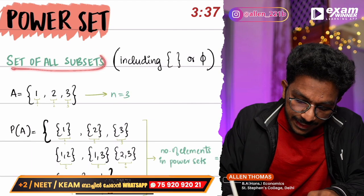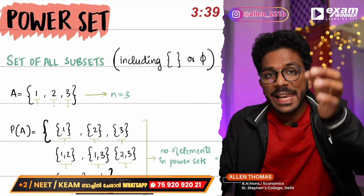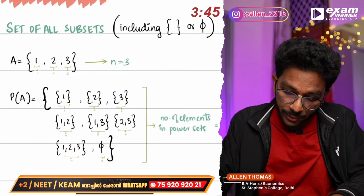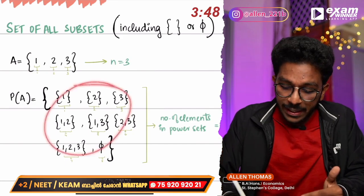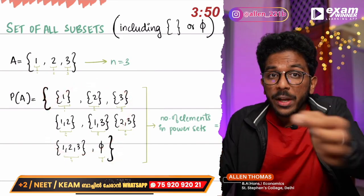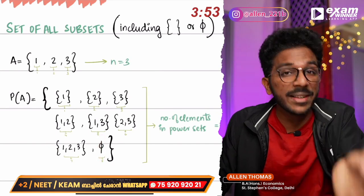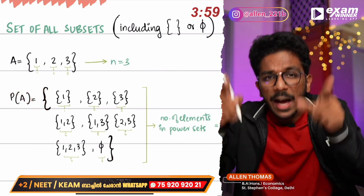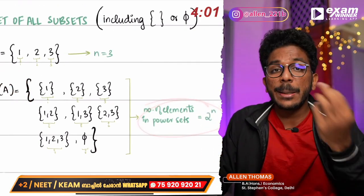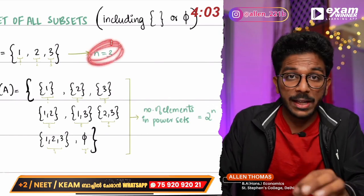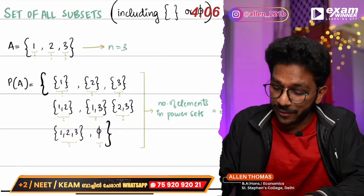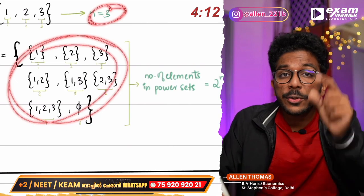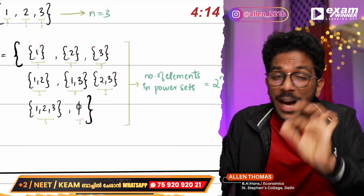The definition of the power set is the set of all subsets. All subsets include the empty set. The last subset is the full bracket. This is the power set P(A). Now, the number of elements in the power set: here n is 3. The formula is 2 raised to n. The number of elements in the power set is 2 raised to 3, which is 8. That formula is very important.